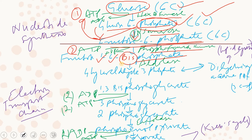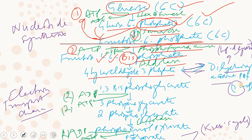In the presence of aldolase — via aldol condensation — fructose-1,6-bisphosphate is converted into glyceraldehyde-3-phosphate (G3P). This G3P is then rearranged into dihydroxyacetone phosphate (DHAP). Remember, G3P is a three-carbon molecule and DHAP is also a three-carbon molecule, so three plus three accounts for the original six-carbon molecule we started from.